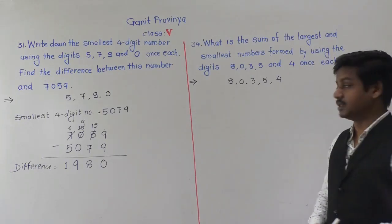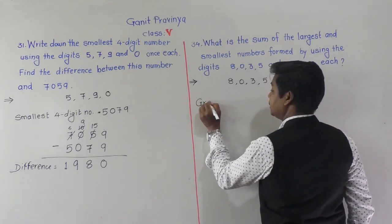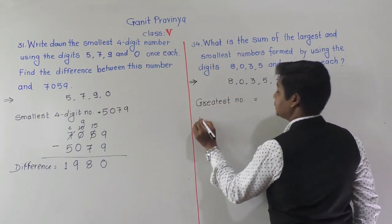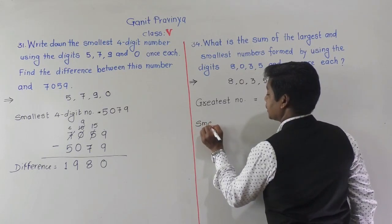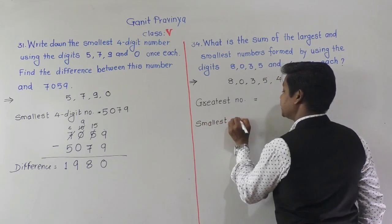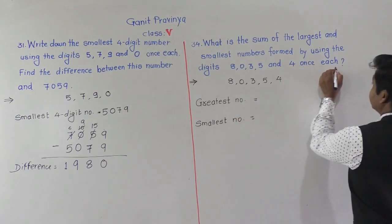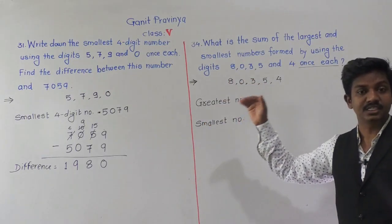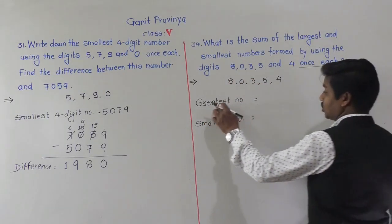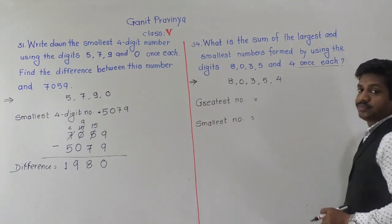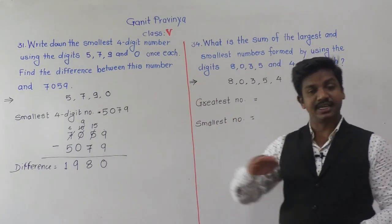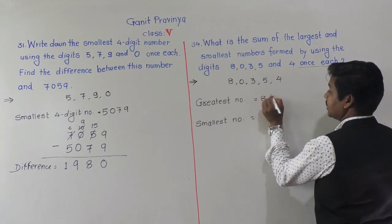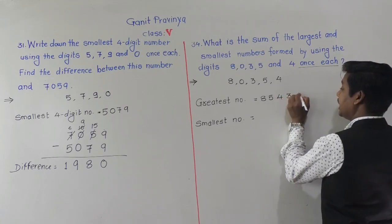We have to form both the greatest number and the smallest number using these five digits — 8, 0, 3, 5 and 4 — with no repetition allowed. To form the greatest number, arrange the digits in descending order: 8, 5, 4, 3, 0. So the greatest number is 85,430.